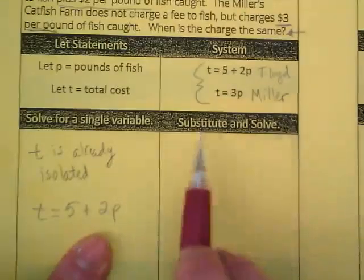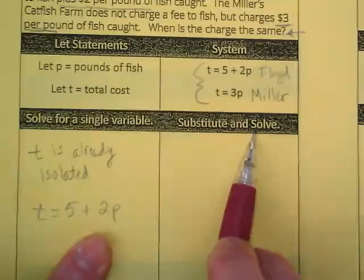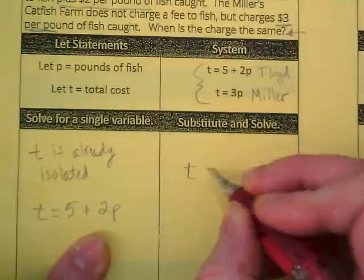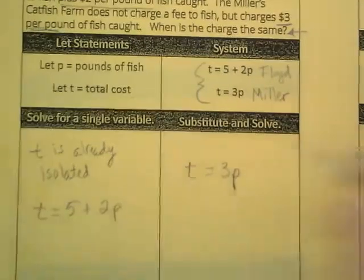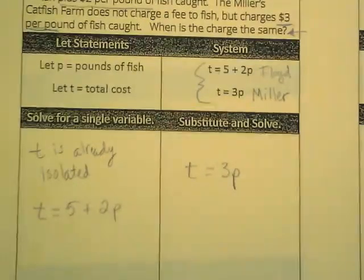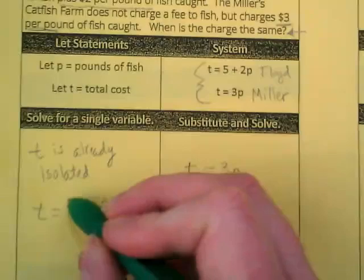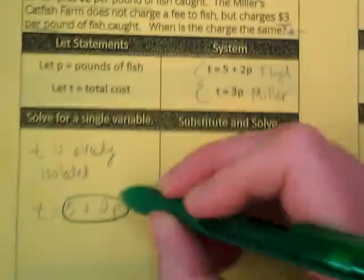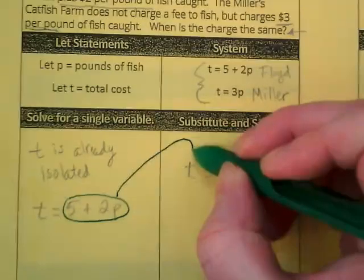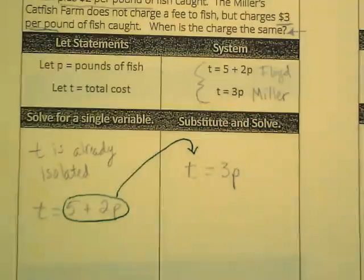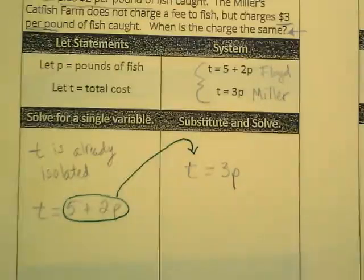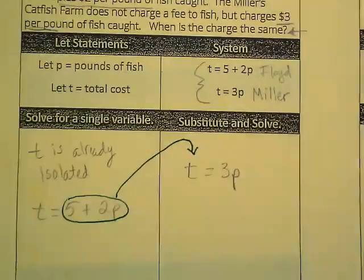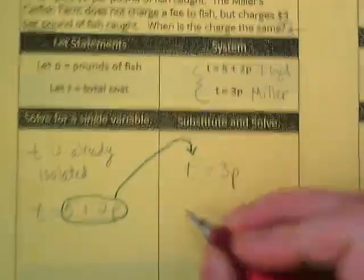And then in the second we're going to put substitute and solve in our second box. So we're going to take the second equation, T is equal to 3p. But basically I'm going to take what t was equal to in the first equation and I'm going to plug it in where the t is in the second equation.